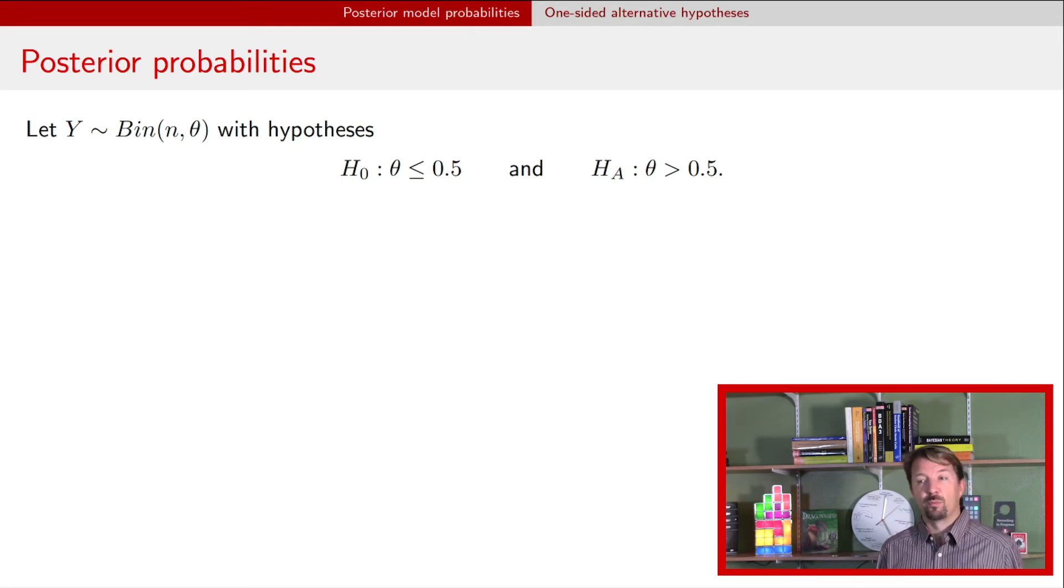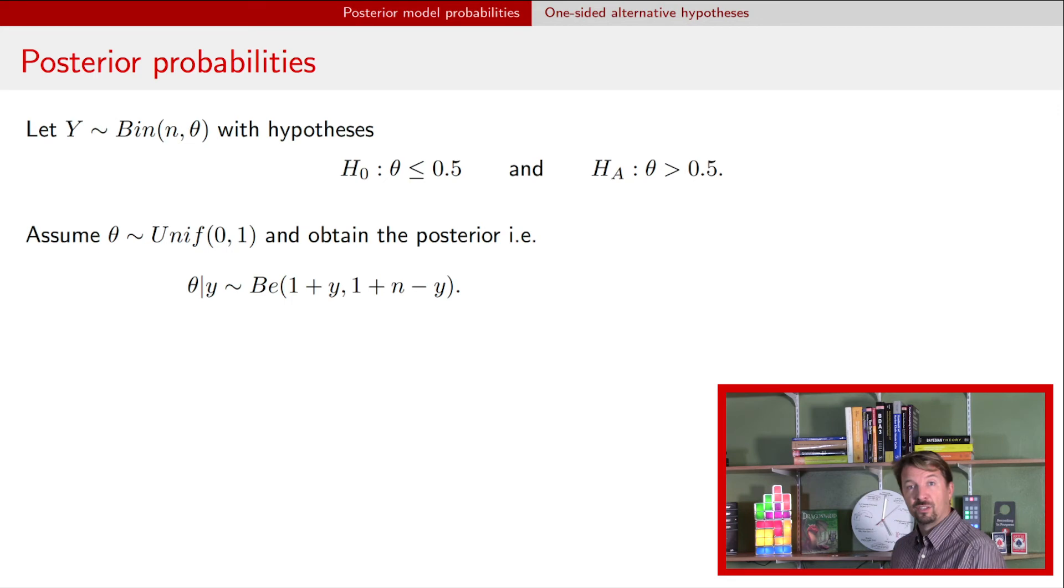So as a Bayesian we have to assign a prior for unknown parameters, that's theta. We're going to use our standard default prior here being uniform 0,1 but you could use whatever prior you want but then you just derive the posterior according to that prior. In our case it's going to be a beta distribution with parameters 1 plus y the number of successes and 1 plus n minus y the number of failures.